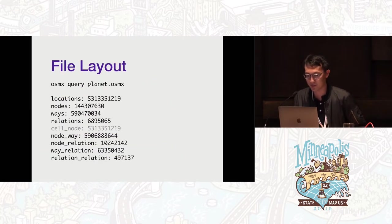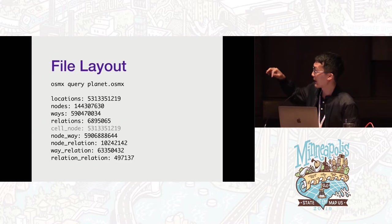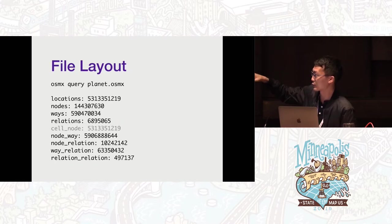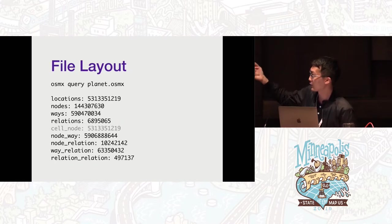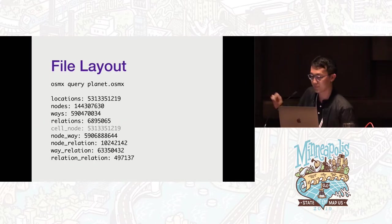To describe the file layout: in an LMDB database you have multiple tables, and in total there are 10 tables. You can get an idea of locations, nodes, ways, and relations — those store coordinates or tags. There are also tables in the other direction: from a node to all the ways it belongs to, from a node to all the relations it belongs to, and so on.